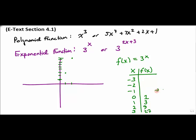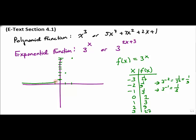For negative 1, I flip because of the negative exponent, giving 1/3. At negative 2, I have 3^(-2) = 1/9, which is closer to the x-axis. At negative 3, I get 1/27, even closer. So as these numbers approach negative infinity, I'm getting closer and closer to the x-axis but never crossing it.